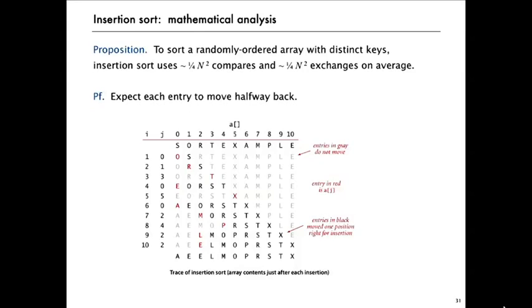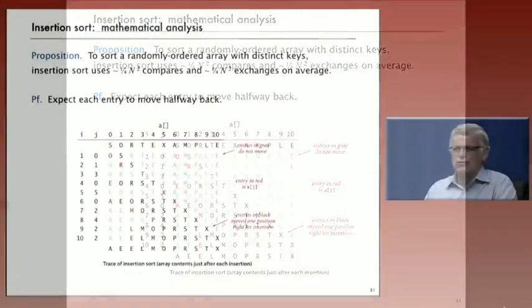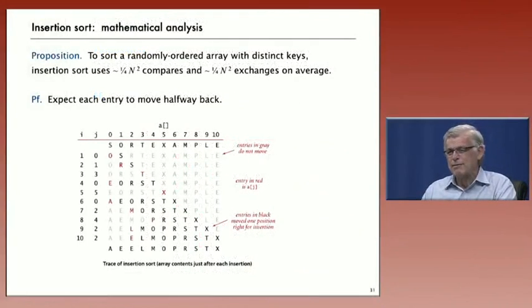What about the analysis of insertion sort? It's more complicated. Our proposition says that insertion sort to sort randomly ordered array with distinct keys, it'll use about one quarter N squared compares, and about the same number, one quarter N squared exchanges on the average.